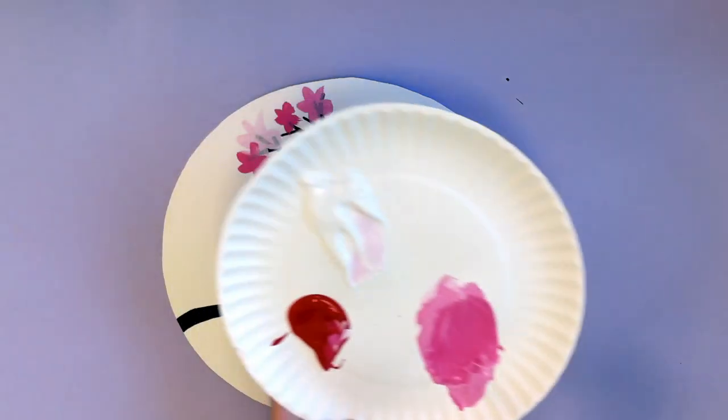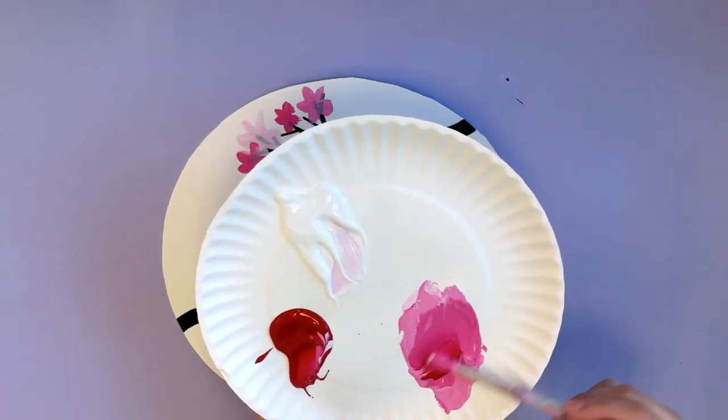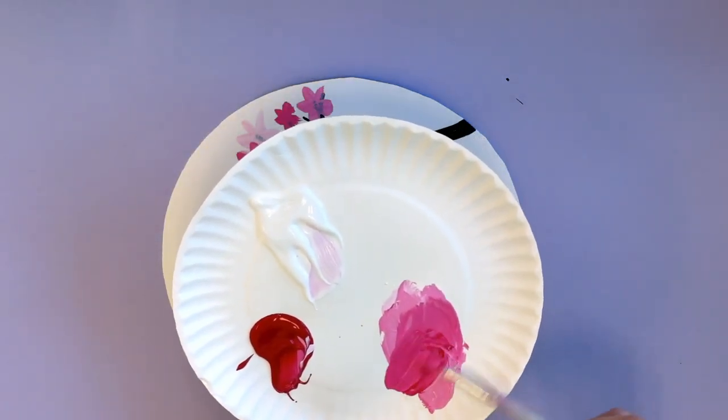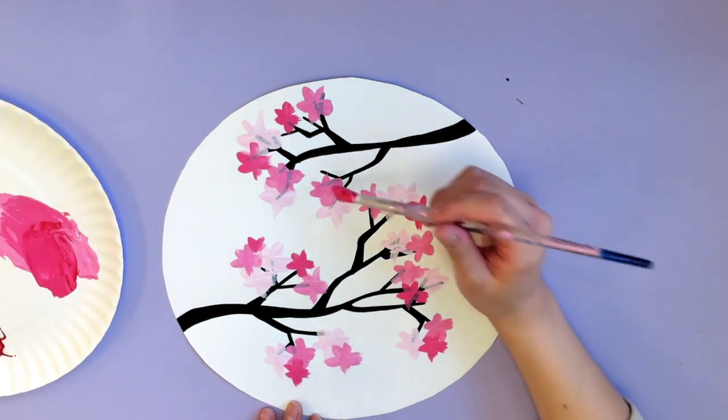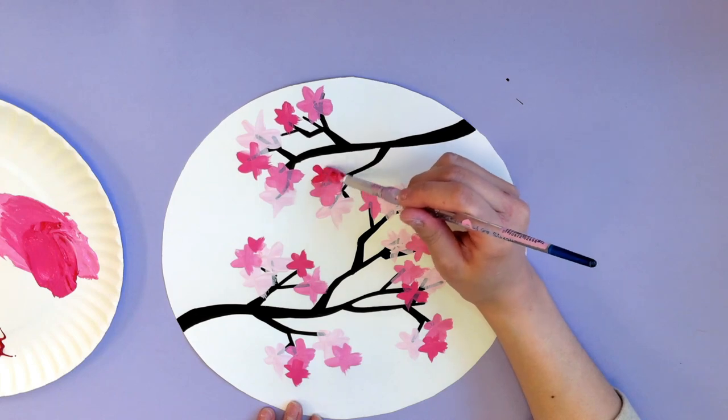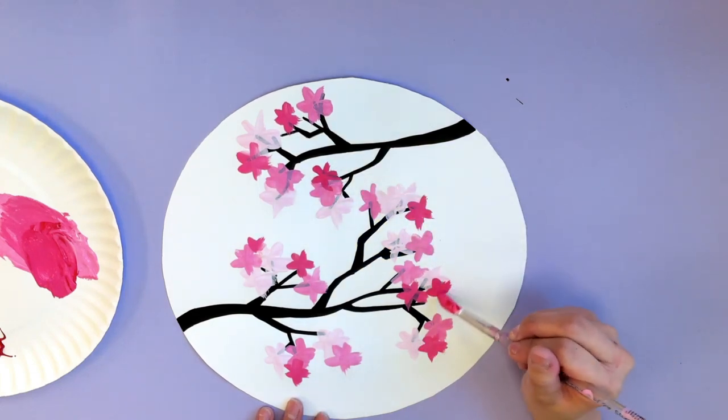When you guys are done with that, we're going to go ahead and mix the darkest cherry blossom. I'm not going to pick up any white this time because this is the darkest cherry blossom. We're going to add this into some of the spots, not too much. This is kind of like an accent color where it's not going to take up most of the picture, but it's going to just be added into some spots.